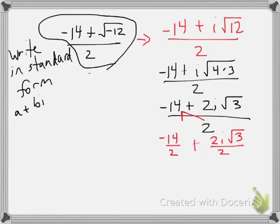And I ask myself, can I simplify this fraction? Can I simplify these numbers? And the answer is yes, I end up with negative 7 plus i the square root of 3.